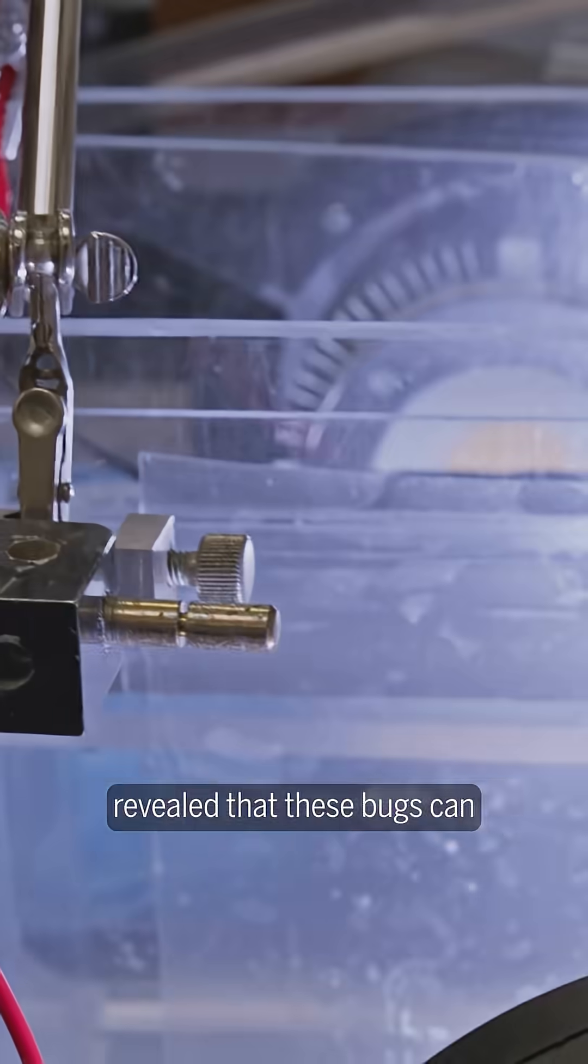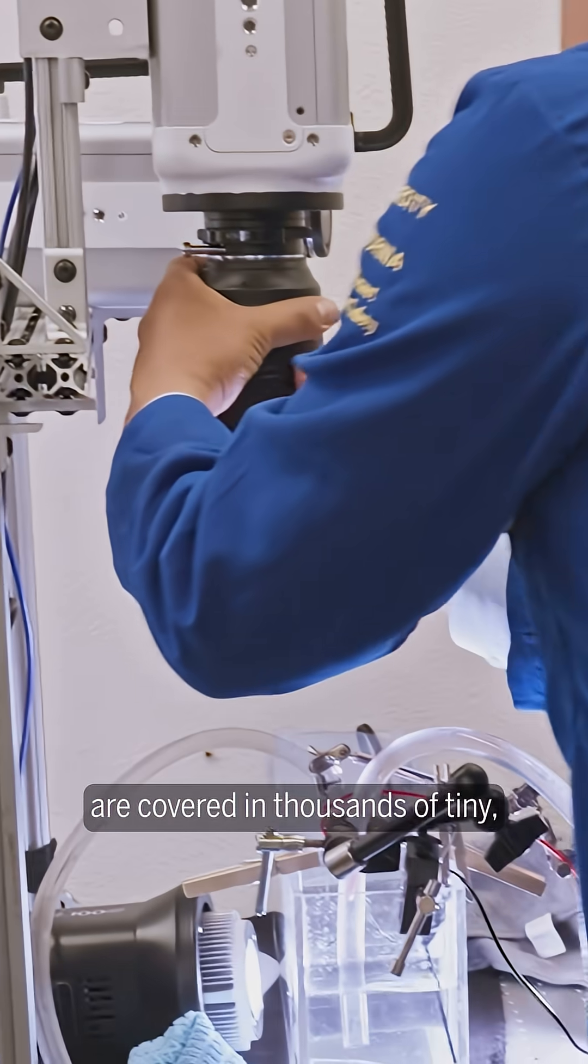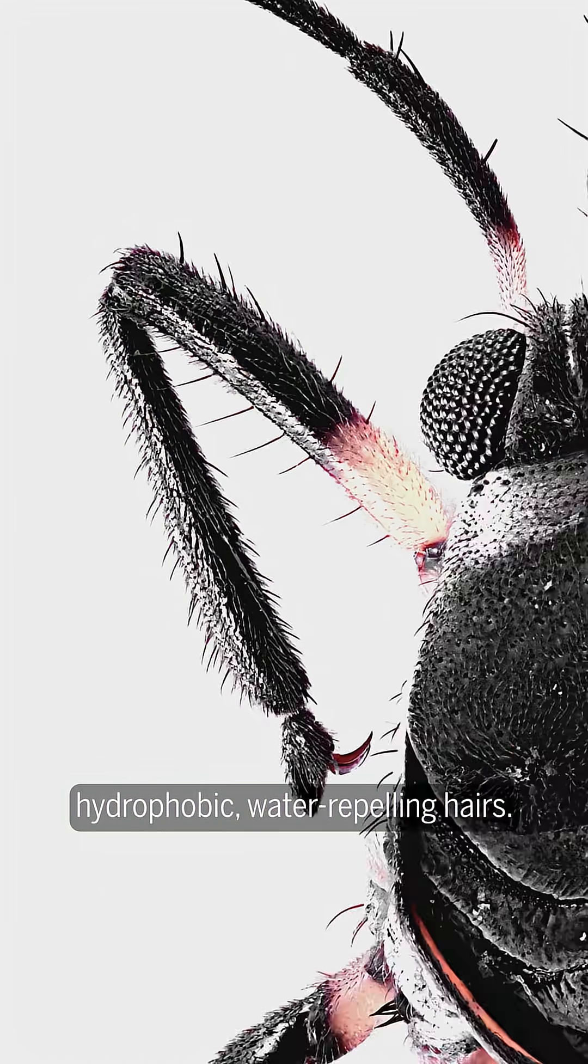High-speed imagery revealed that these bugs can balance atop the water because their front and back legs are covered in thousands of tiny hydrophobic, water-repelling hairs.